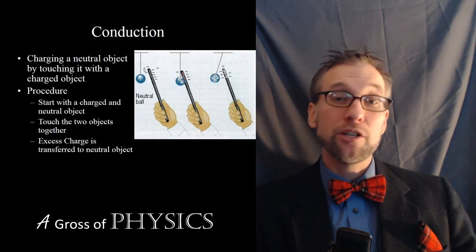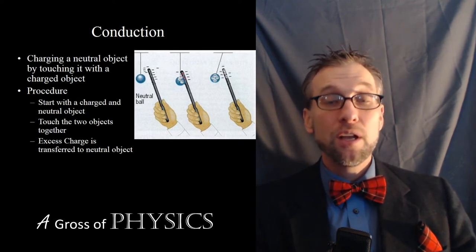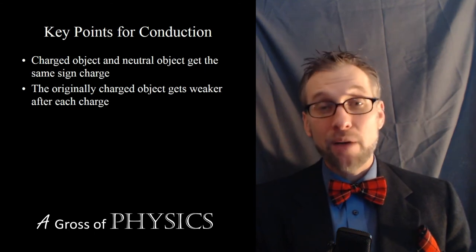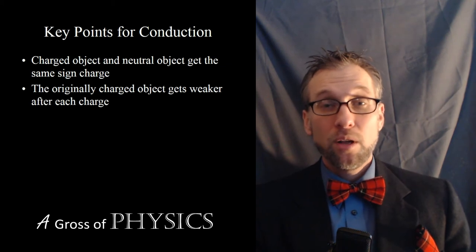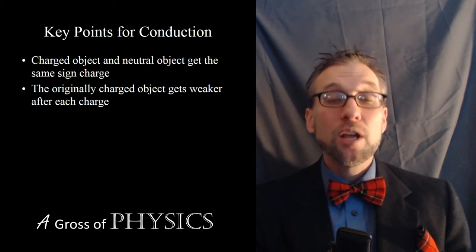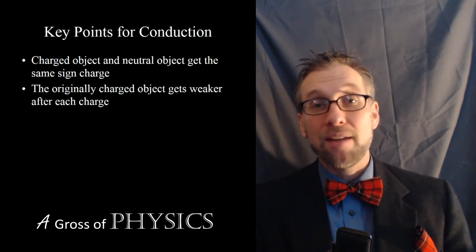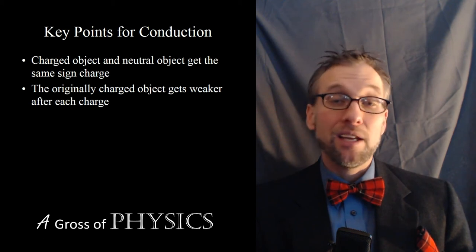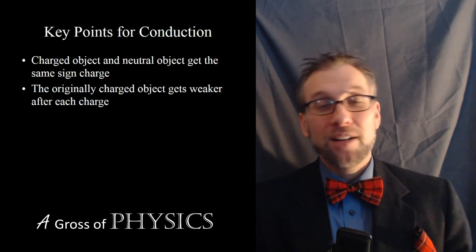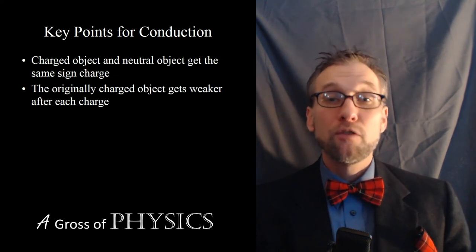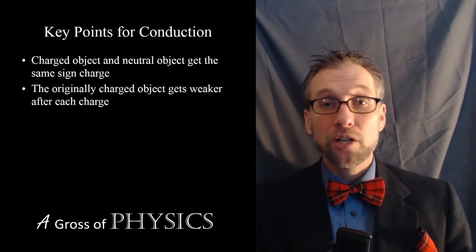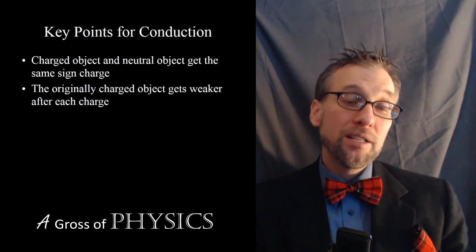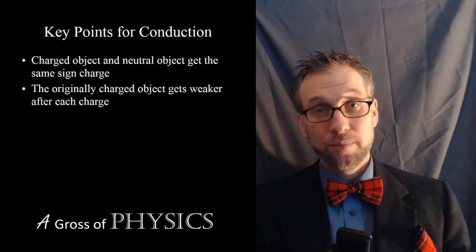If I start with a charged object and touch it to a neutral object, both objects will have a negative charge. Although they both have a negative charge, some of those electrons that were on the rod are now in the electroscope. The electroscope has a negative charge and the rod has a negative charge, but they're weaker than originally. For example, the charged rod may have had 10 extra electrons when I started. When I touch it to the neutral electroscope, it'll get negative five and the rod itself will have negative five. There's almost like a half-life to touching objects by conduction — every time I touch an object with a charged object, it's going to at least halve in its original charge. What's important is that the charge on the neutral object is the same sign as the original.